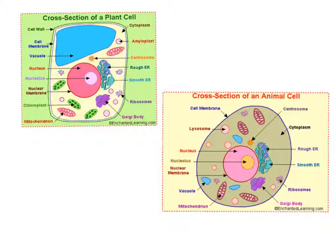The next definition is cell wall. A wall on a cell is something that serves as support, very similar to a wall in a home or in a school. It actually protects the cells of the plant or algae, spelled A-L-G-A-E, and bacteria, spelled B-A-C-T-E-R-I-A.